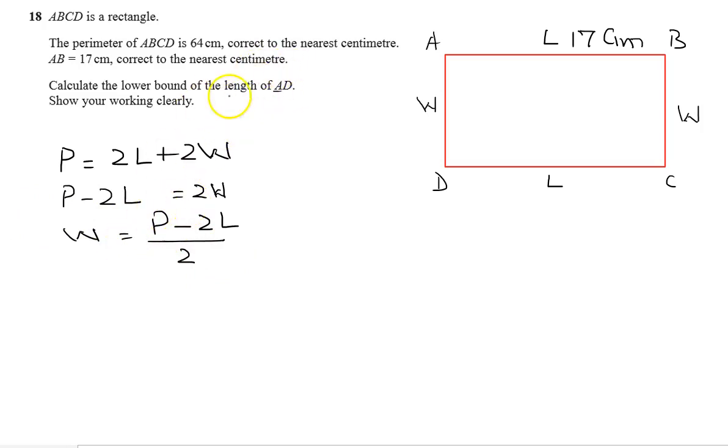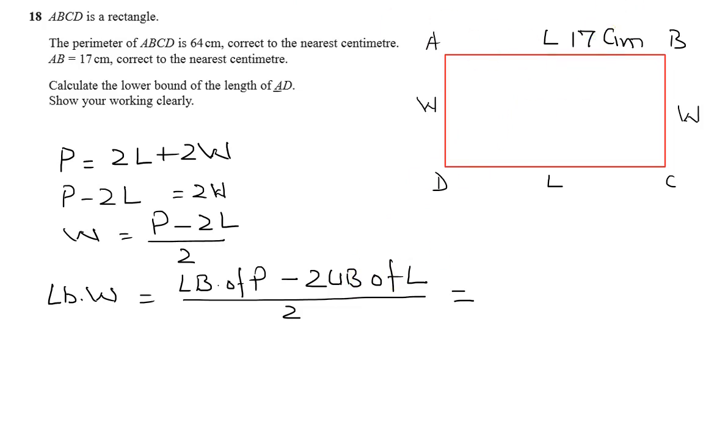Now if we have to find lower bound of W, then the perimeter must be of lower bound. We are subtracting, so to make it lower, this is supposed to be upper bound. This is 17, we need the upper bound of 17, so upper bound is 17.5.